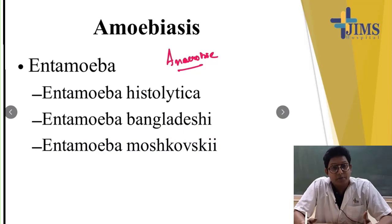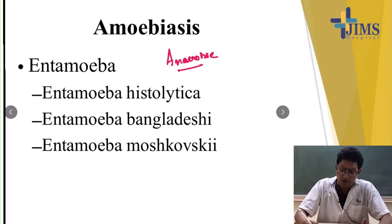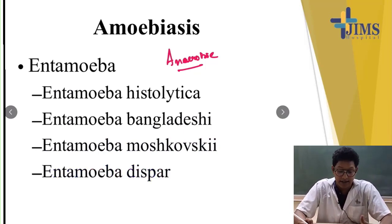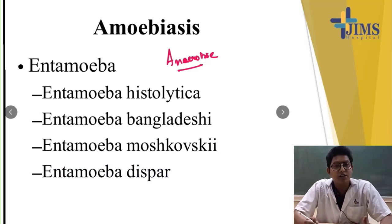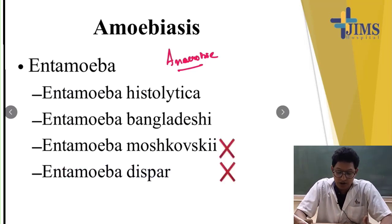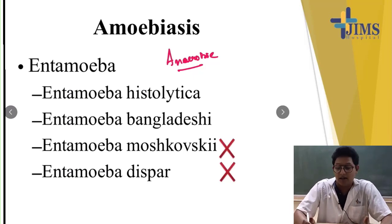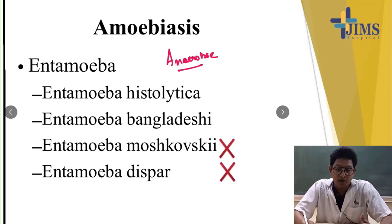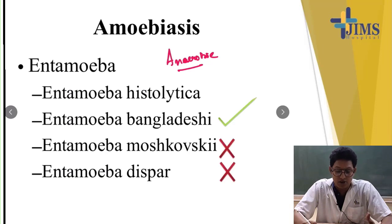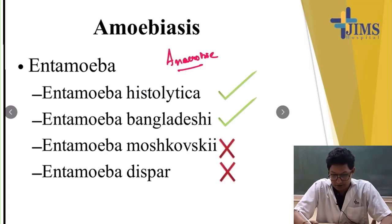The other two species are Entamoeba morskovskii and Entamoeba dispar. Out of these four, Entamoeba morskovskii and Entamoeba dispar are not found to be pathogenic, whereas Entamoeba histolytica and Entamoeba bangladeshi are found to be pathogenic.